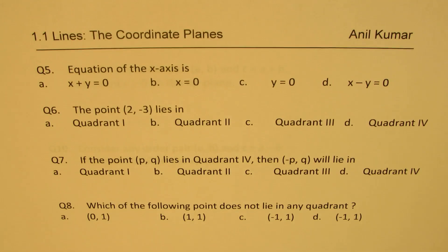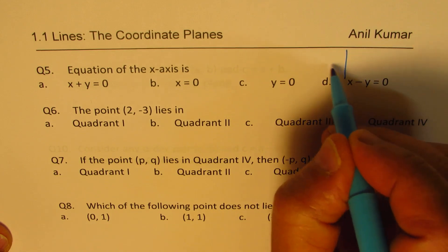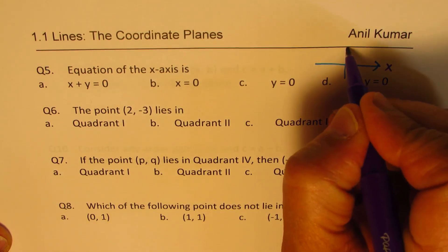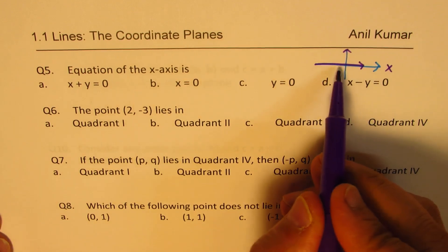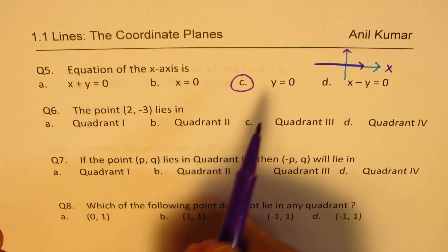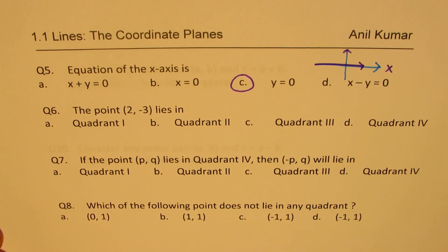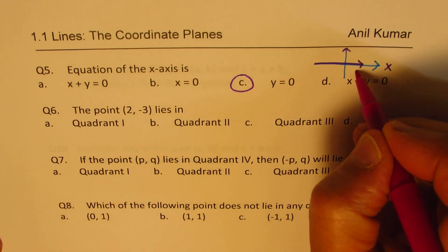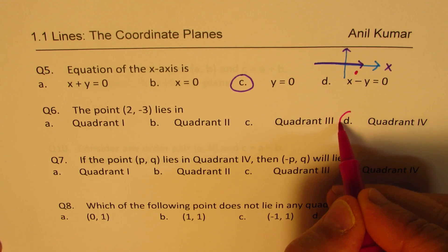Question 5: The equation of the x-axis. This is a very important question — many students get confused. Along the x-axis, the y value is zero, so the answer is y = 0. That is the equation of the x-axis. Question 6: The point (2, -3) — two is positive and three is negative, so it lies in quadrant four. The answer is D.